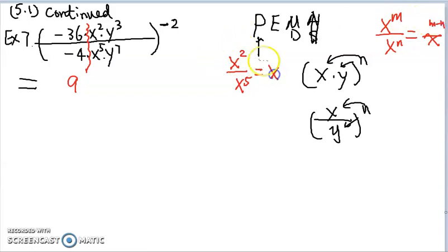So we can get x to the second minus the fifth, the top exponent minus the bottom, get x to negative 3. And what x to negative 3rd power mean? It means 1 over x to the third. So that's one way to do it.